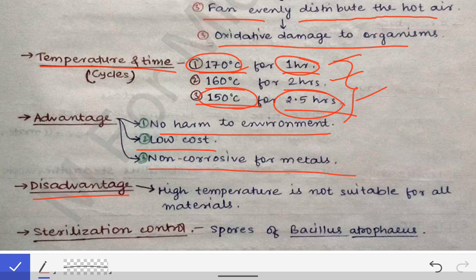The disadvantage of this method is that it uses very high temperatures — 150, 160, or 170°C. These high temperatures are sometimes not suitable for certain materials such as plastics or similar substances, so in those cases the hot air oven method cannot be used for sterilization.